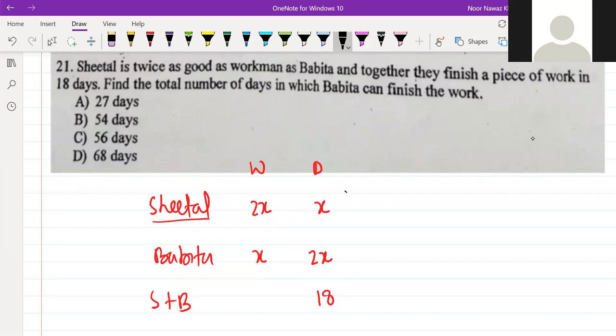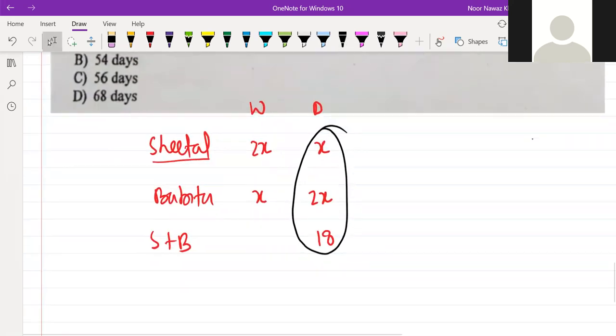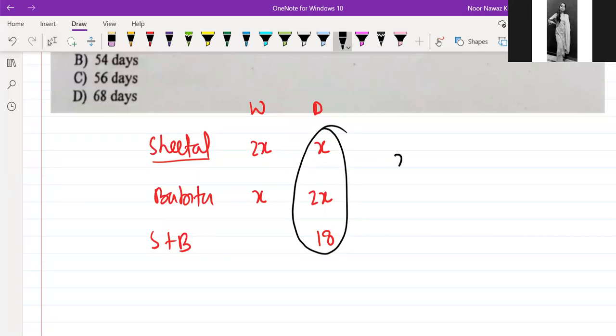Now, will someone tell me what will be equal to these? What will be the relation? X plus 2X into 18 is equal to 1.